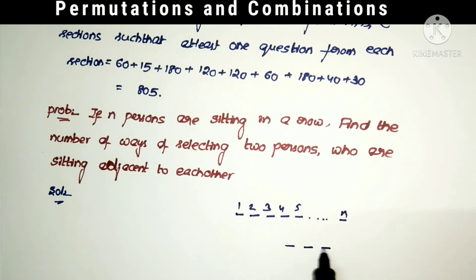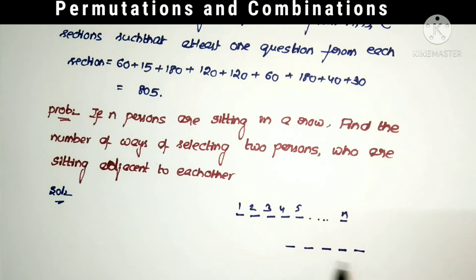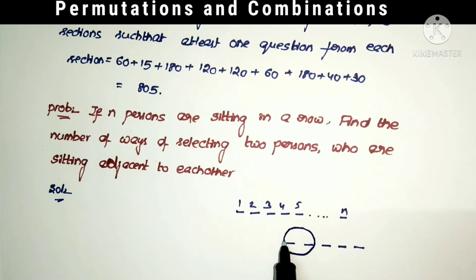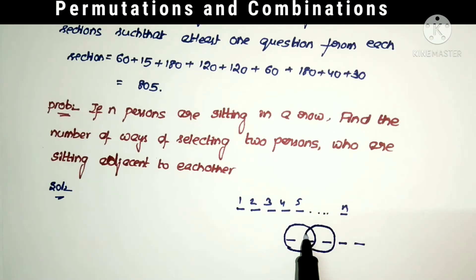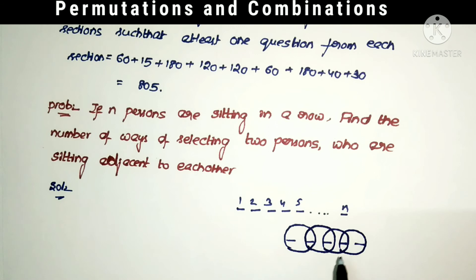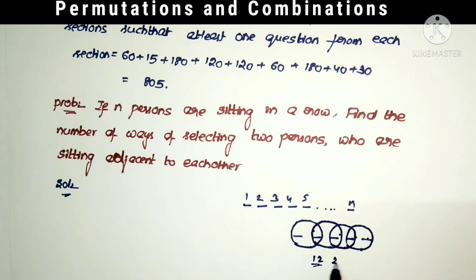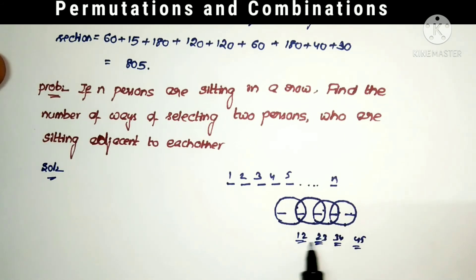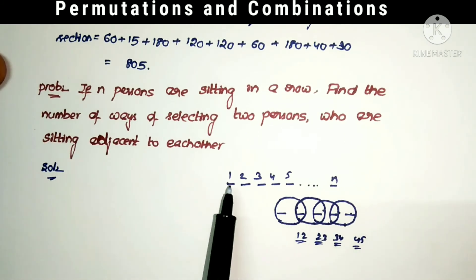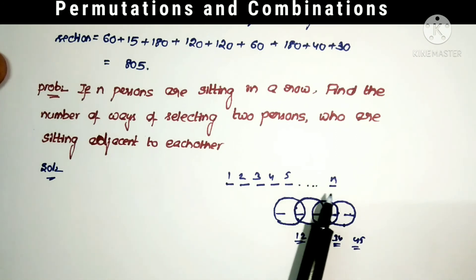Suppose we take 5 persons sitting in a row. In how many ways can we select 2 persons adjacent to each other? The selections are: (1,2), (2,3), (3,4), and (4,5) — that is 4 selections. So in case of 5 persons, the number of selections is 4. For n persons, the number of selections is equal to n minus 1.